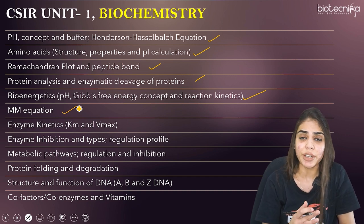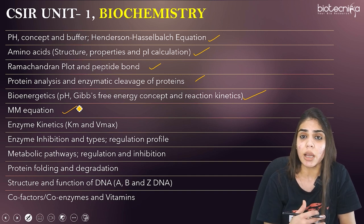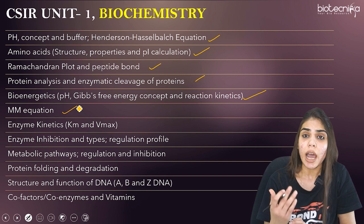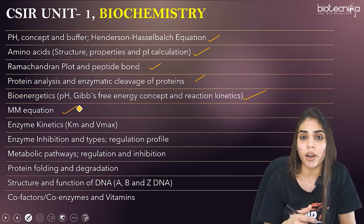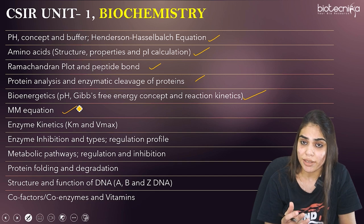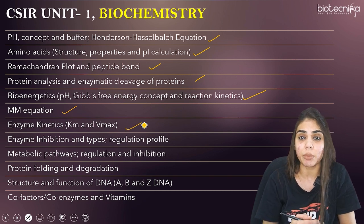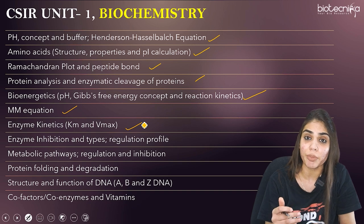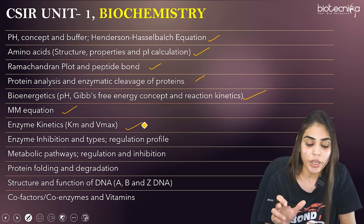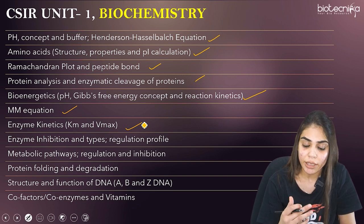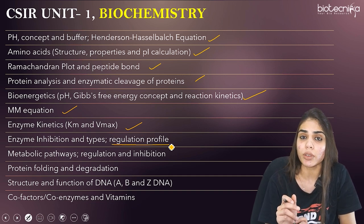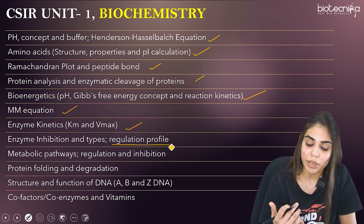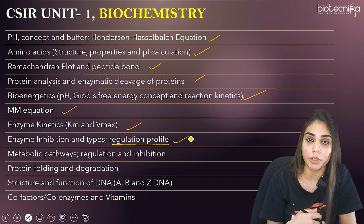The next topic is enzyme kinetics, which is asked in every examination — GATE, DBT, CSIR. You should know how to calculate enzyme activity, KM, and catalytic efficiency. You should know the six classes of enzymes, KM and Vmax values, and enzyme inhibition. There are many types of inhibition: uncompetitive, non-competitive, mixed inhibition. You should know the plots and equations for all these types, and also how to calculate the apparent KM and inhibitor profile.